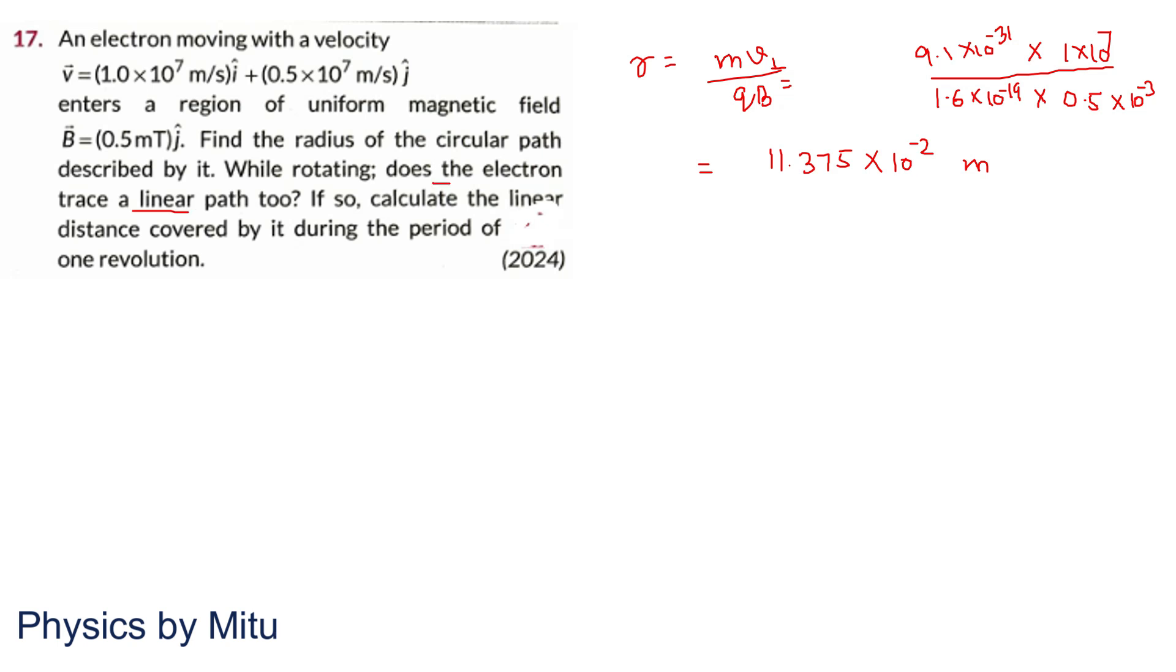While rotating, does the electron trace a linear path too? Yes, it traces linear path along Y direction. If so, calculate the linear distance covered during the period of one revolution, which is also called pitch.